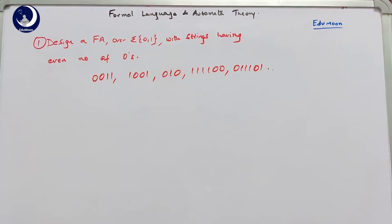Similarly, there can be any number of ones with four zeros, six zeros, and so on. The total count of zeros should be even, and there is no restriction on the number of ones. So we design the machine as follows.